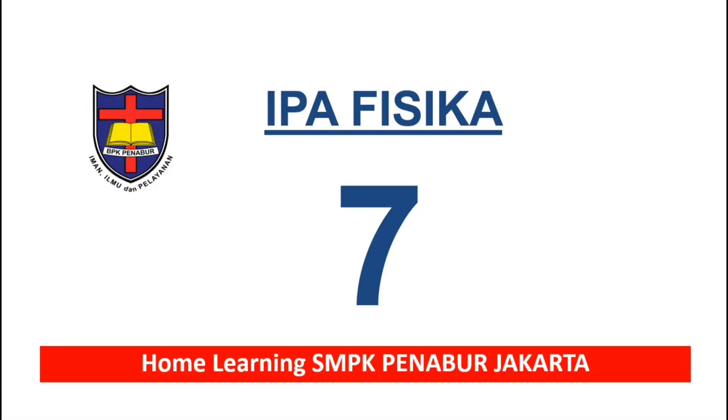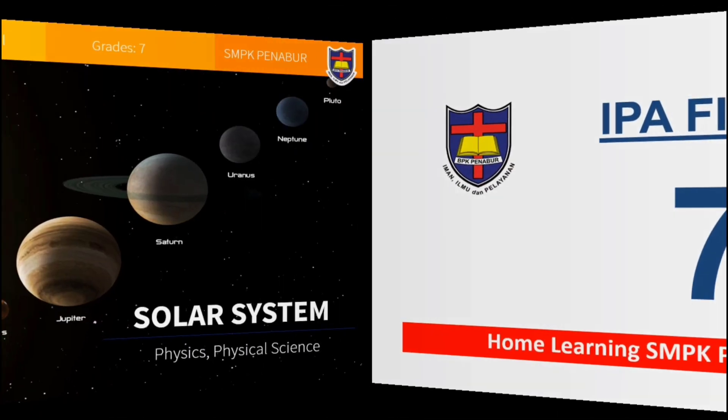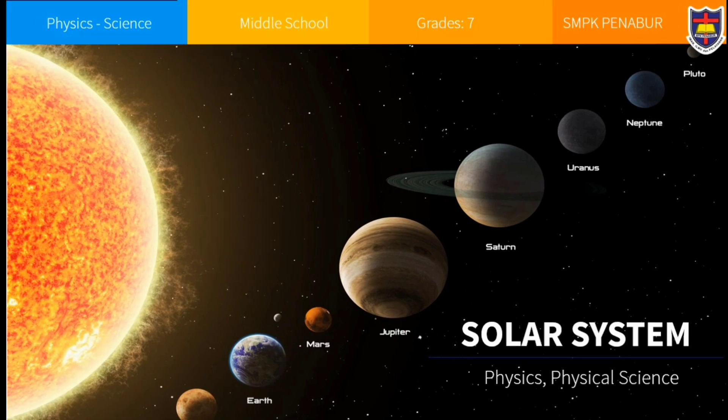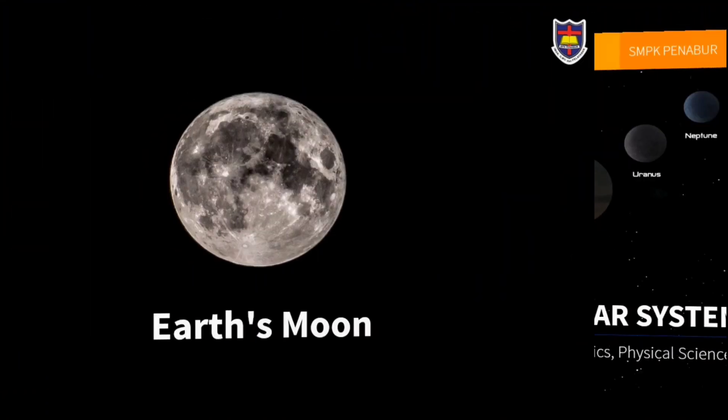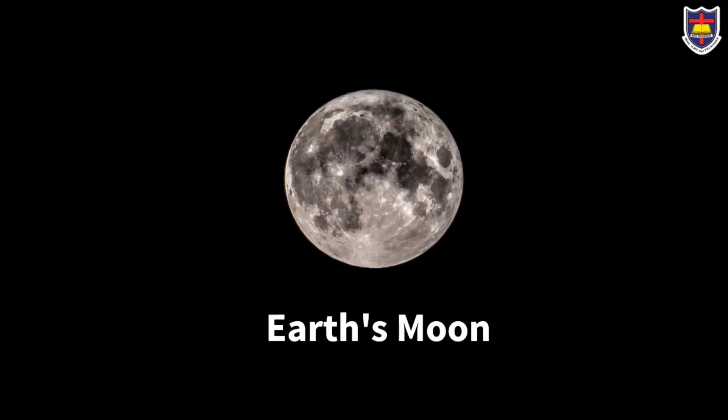Hi guys, we continue our lesson about Earth's moon. Our topic today consists of five characteristics of the moon, rotation and revolution of the moon, the basis of the moon, solar calendar, and lunar calendar.